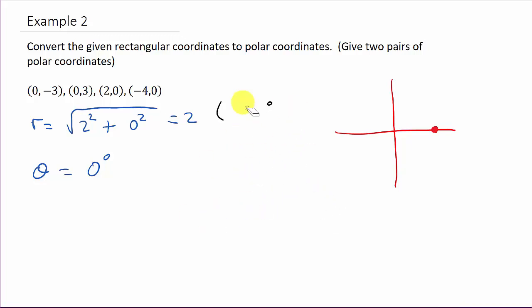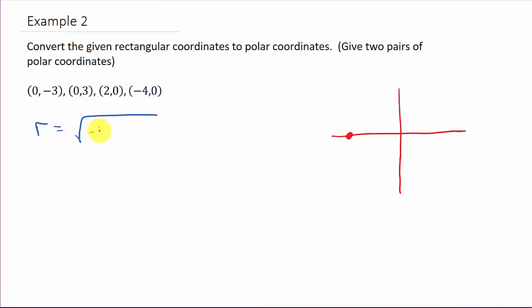All right. So let's check out the last one here. Hopefully you're getting the hang of these. These are actually easier than the ones that fall in the different quadrants, first, second, third, and fourth quadrant. A lot easier when they fall on the axis. All right. So let's look at this. Negative 4, 0. So let's see. Negative 4 and then 0. Okay. So let's get r. r is the square root. And that's going to be negative 4 squared plus 0 squared. So that's 16 plus 0 is 16. Square root of 16 is 4. And then we need theta. So if I'm out here at 4 and I rotate, well, theta is 180 degrees. And so my polar coordinates would be 4, 180 degrees.